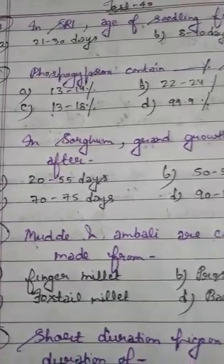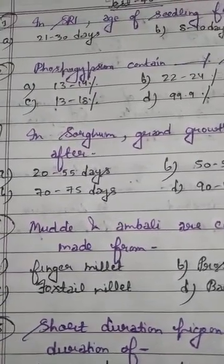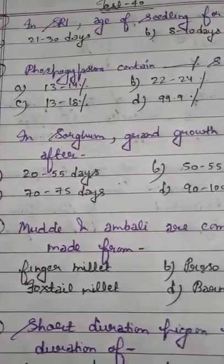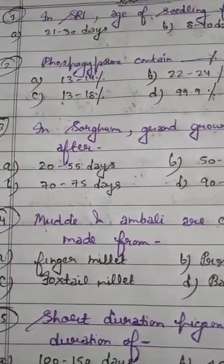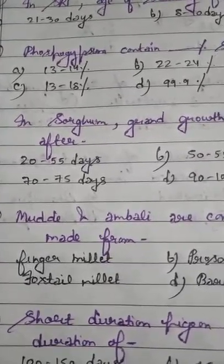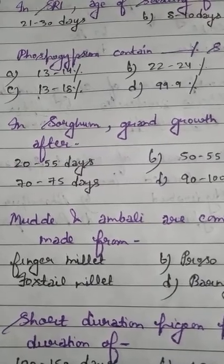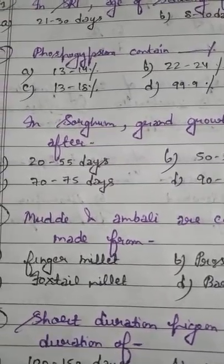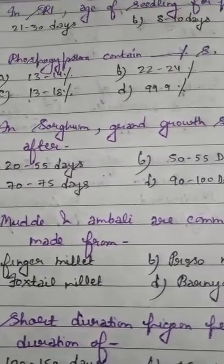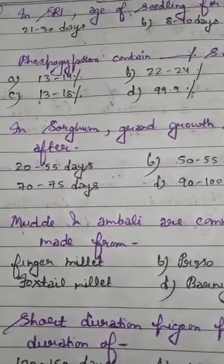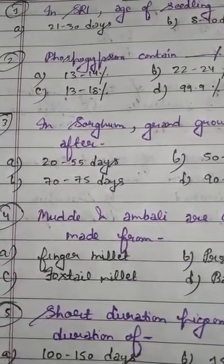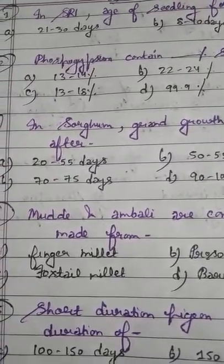Question number 2: Phosphogypsum contains dash percent sulfur. Option A: 13 to 14 percent. Option B: 22 to 24 percent. Option C: 13 to 18 percent. Option D: 99.9 percent. Option D — 99.9 percent — is the sulfur content of elemental sulfur. Option A — 13 to 14 percent — is the sulfur in gypsum. Option B — 22 to 24 percent — is the sulfur in iron pyrite. The correct answer is option C: phosphogypsum contains 13 to 18 percent sulfur.